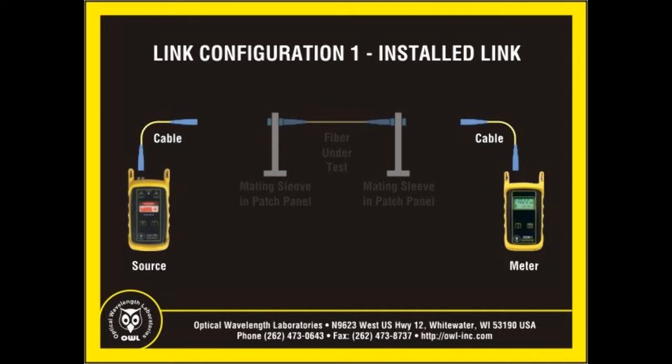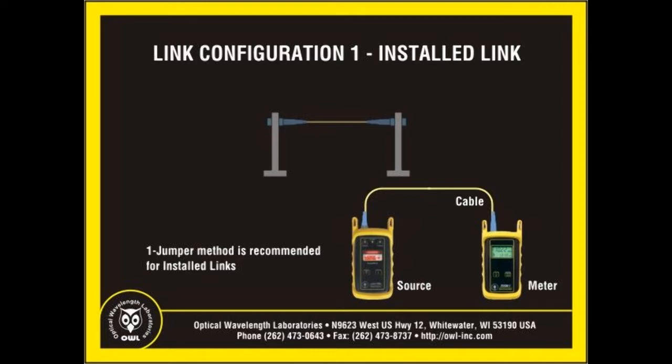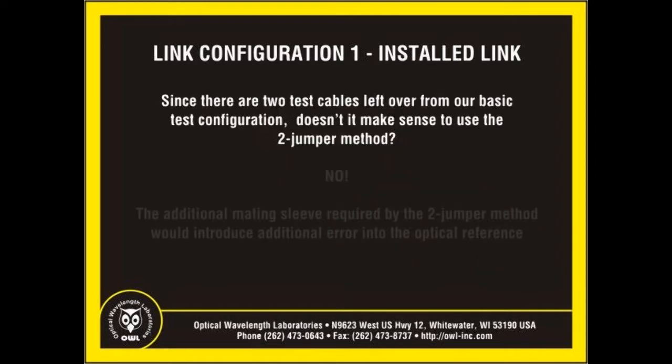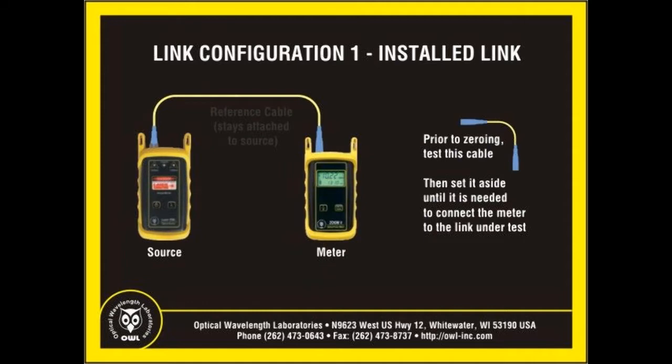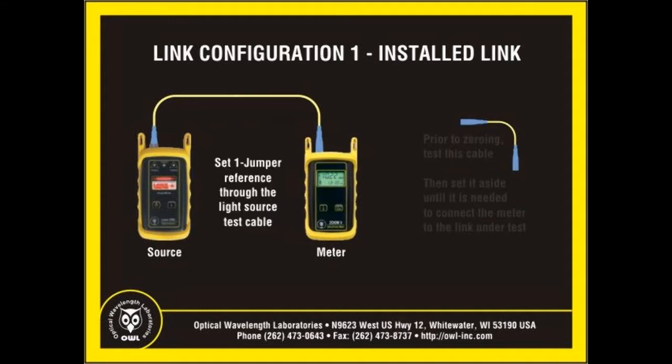What remains are the two test cables, the light source, and the power meter. The recommended reference method here is the one-jumper method, where the test cable attached to the light source becomes the reference cable. You may ask whether the two-jumper method makes sense since there are two test cables left over. The answer is no — using the two-jumper method would introduce an additional mating sleeve into the reference equation, introducing additional unwanted error into the final test result, making the test less accurate. Simply check the power meter test cable first to ensure it is good, set it aside, then use the light source test cable to set the one-jumper reference.